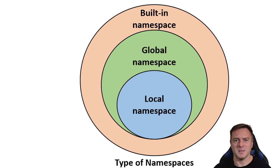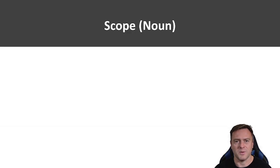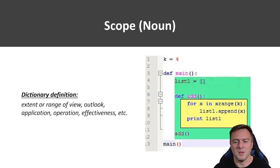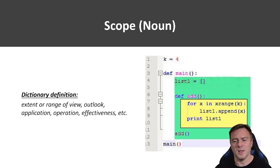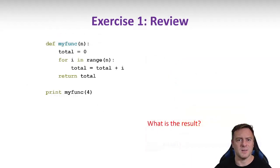Here are the different namespaces we have. You have a local namespace which encloses your enclosed functions, then you have your global namespace, and then you have your built-in namespace which is all the variables built into Python when you start it up. Scope — it's not just a sniper scope; it's the extent, range, view, or outlook of application, operation, and effectiveness. If we look at a function, where does the scope occur? How does list one in this particular function get accessed? It's above — not down inside the function, but inside the whole function above it. That's where we have to understand how scope works.